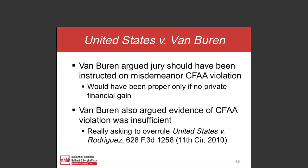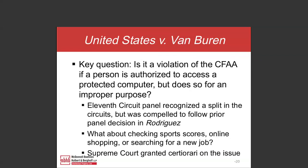It wasn't that he lacked a password to get into the database — it was that he was accessing it for an improper purpose. So the key question in Van Buren was: is it a violation of the CFAA if a person is authorized to access a protected computer, something on the internet, but does so for an improper purpose?